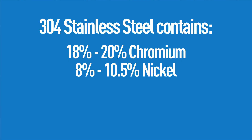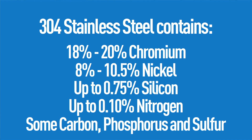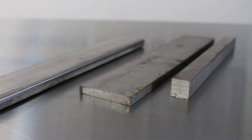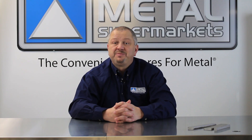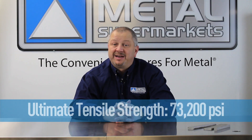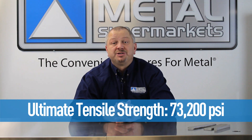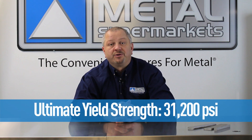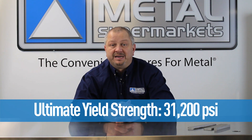304 stainless also contains up to 0.75 percent silicon and 0.10 percent nitrogen, as well as some carbon, phosphorus, and sulfur. In terms of mechanical properties, 304 stainless typically has an ultimate tensile strength of 73,200 psi and an ultimate yield strength of 31,200 psi.